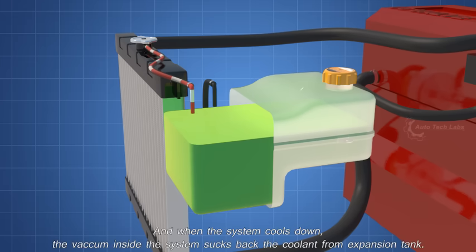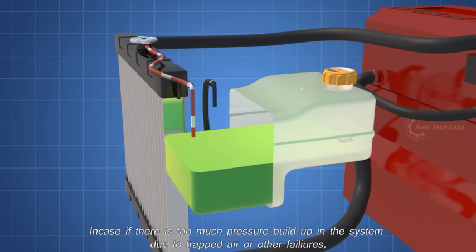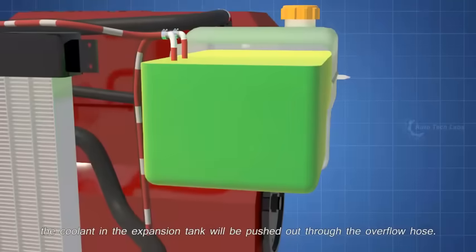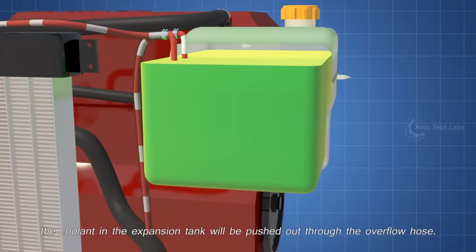And when the system cools down, the vacuum inside the system sucks back the coolant from expansion tank. In case if there is too much pressure build up in the system due to trapped air or other failures, the coolant in the expansion tank will be pushed out through the overflow hose.